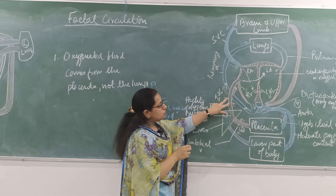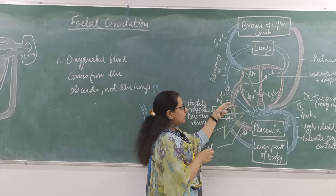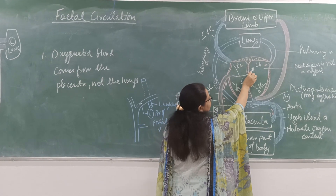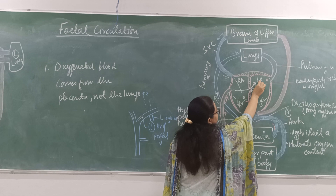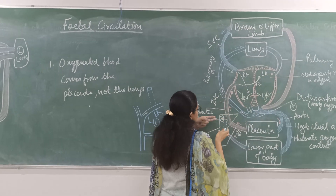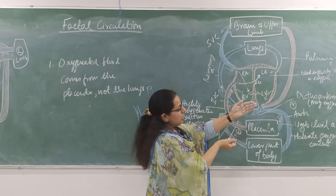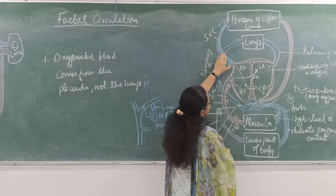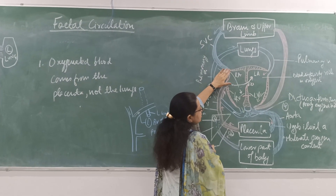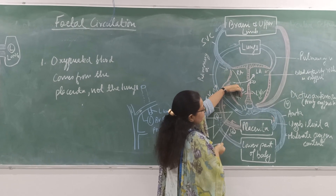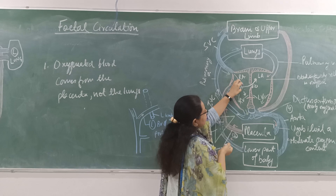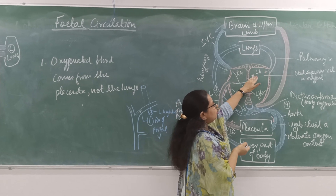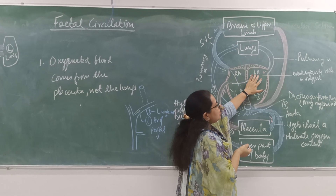As shown in red, the inferior vena cava carries highly oxygenated blood which enters the right atrium. From the right atrium it goes through the foramen ovale to the left atrium. Meanwhile, from the superior vena cava, deoxygenated blood from the brain and upper limbs comes directly into the right atrium. So there is mixing of blood from both the inferior vena cava and superior vena cava in the right atrium, but the majority passes through the foramen ovale into the left atrium as highly oxygenated blood.